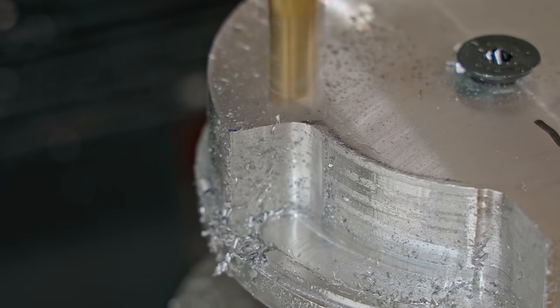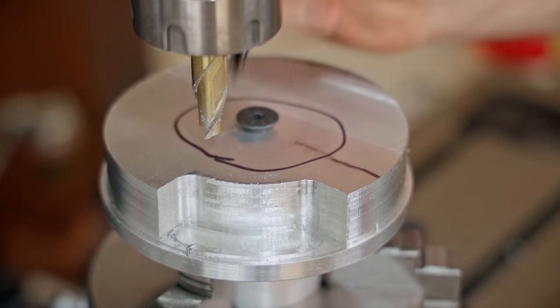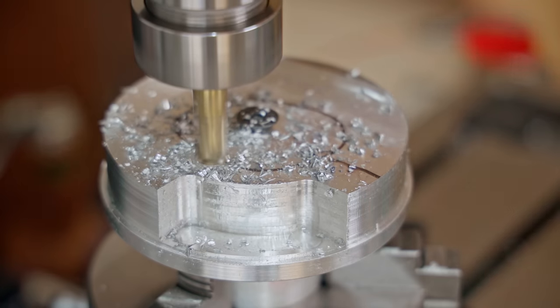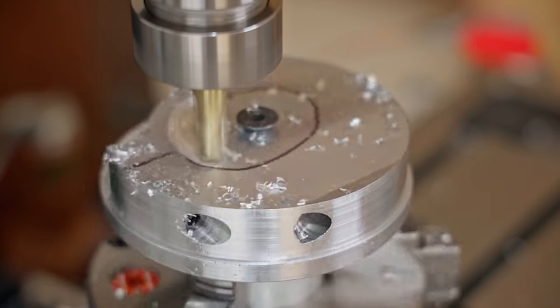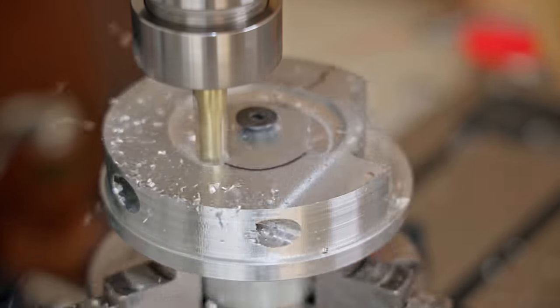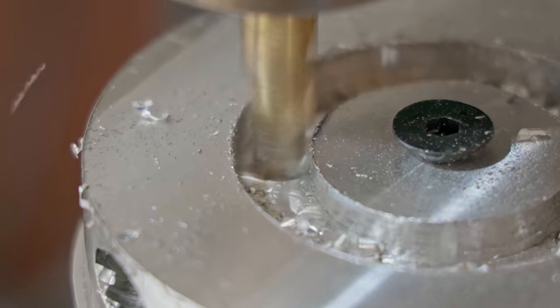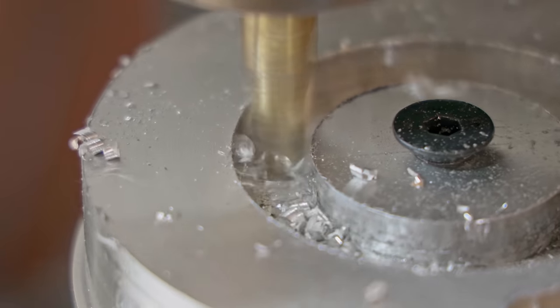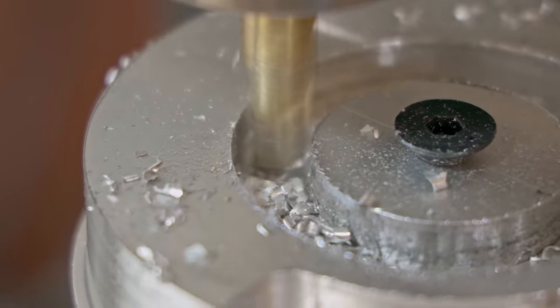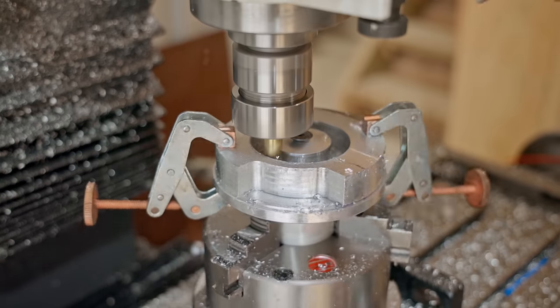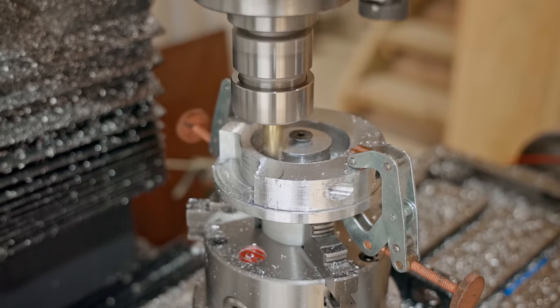That's the outside done, so now I can move the table over and mill out the center. I put a couple of clamps on just in case the CA glue gave way, even though I didn't expect that to happen—just playing it safe.